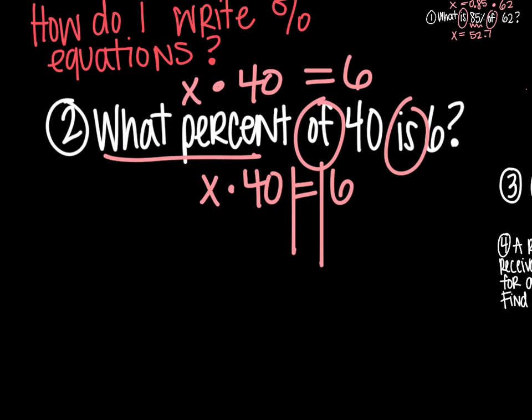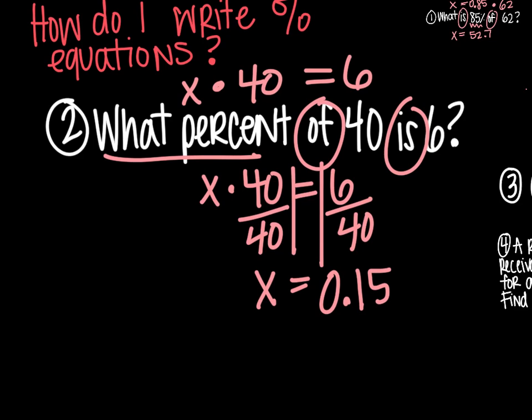And in order to get x by itself, we're going to undo that 40 by division. So we're going to divide. x equals 6 divided by 40. You can use your calculator for that. When you get an answer, it's 0.15. You could also just simplify the fraction. And if you divide by 2, you would get 3 20ths. Either way is fine.